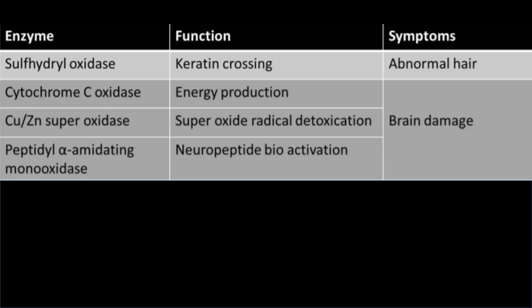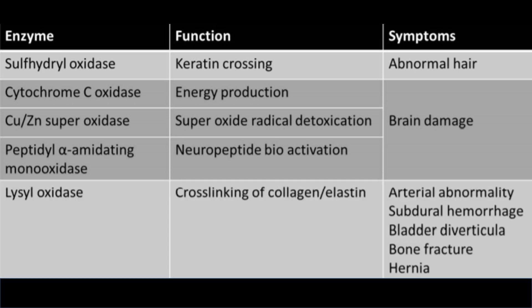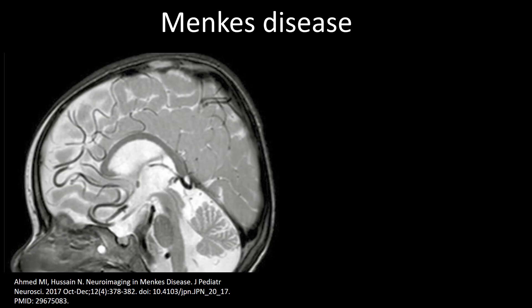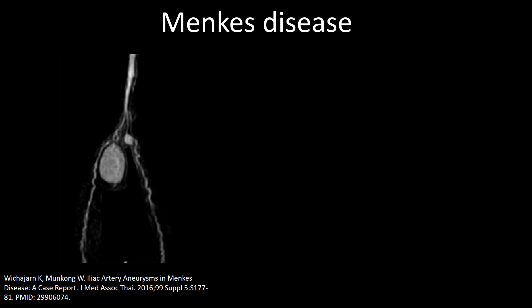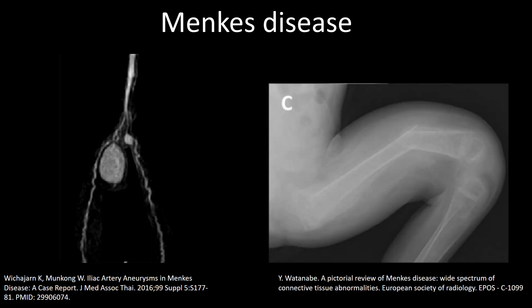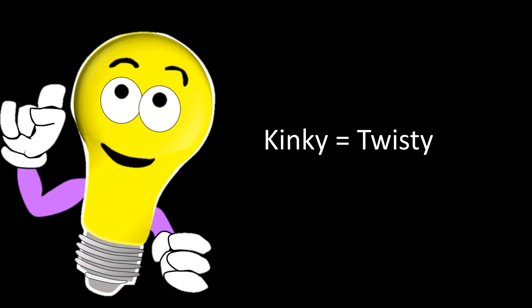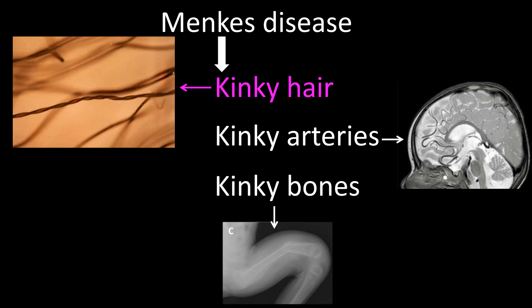Lysyl oxidase deficiency produces abnormal collagen and many abnormalities: tortuous spiral arteries in the brain often leading to subdurals, and arterial aneurysms. Sulfhydryl oxidase deficiency produces abnormal hair — the hair breaks easily and is twisted, hence the name kinky hair syndrome. To remember the manifestations of Menkes disease, think kinky — kinky hair, kinky arteries, and kinky bones.